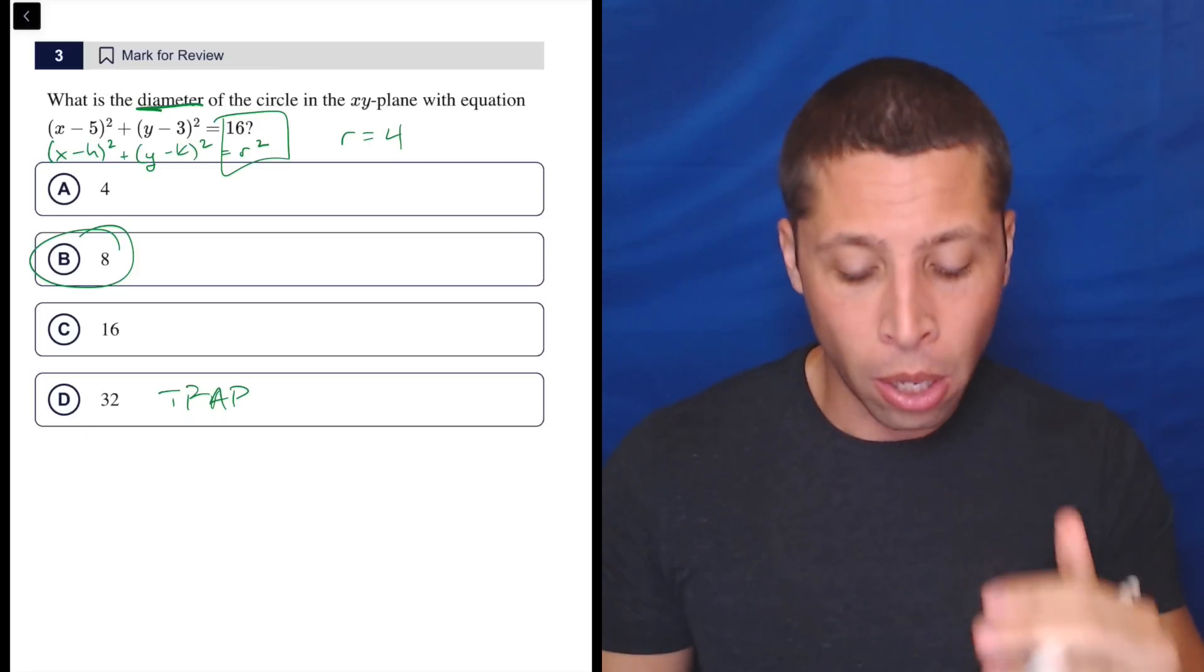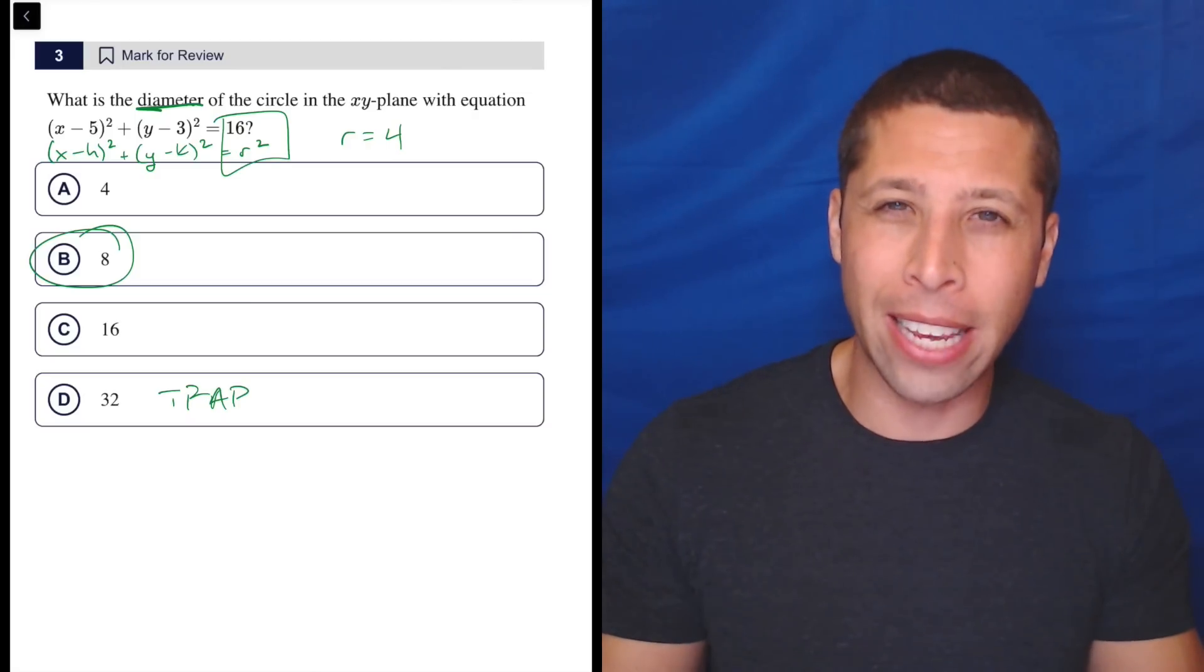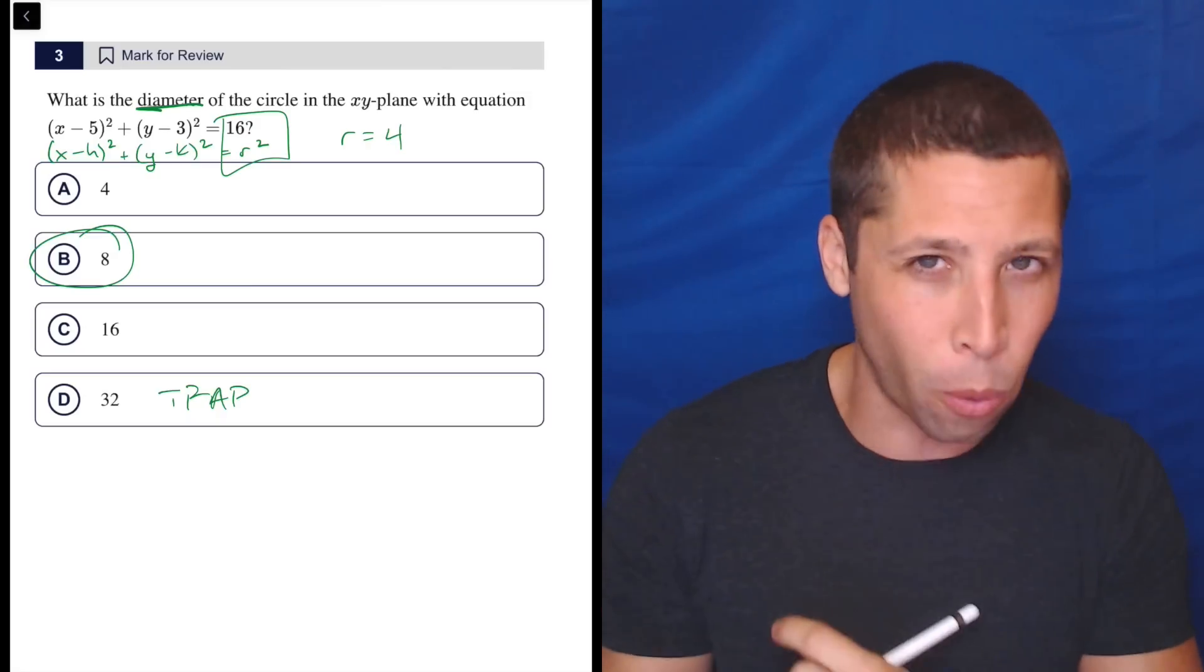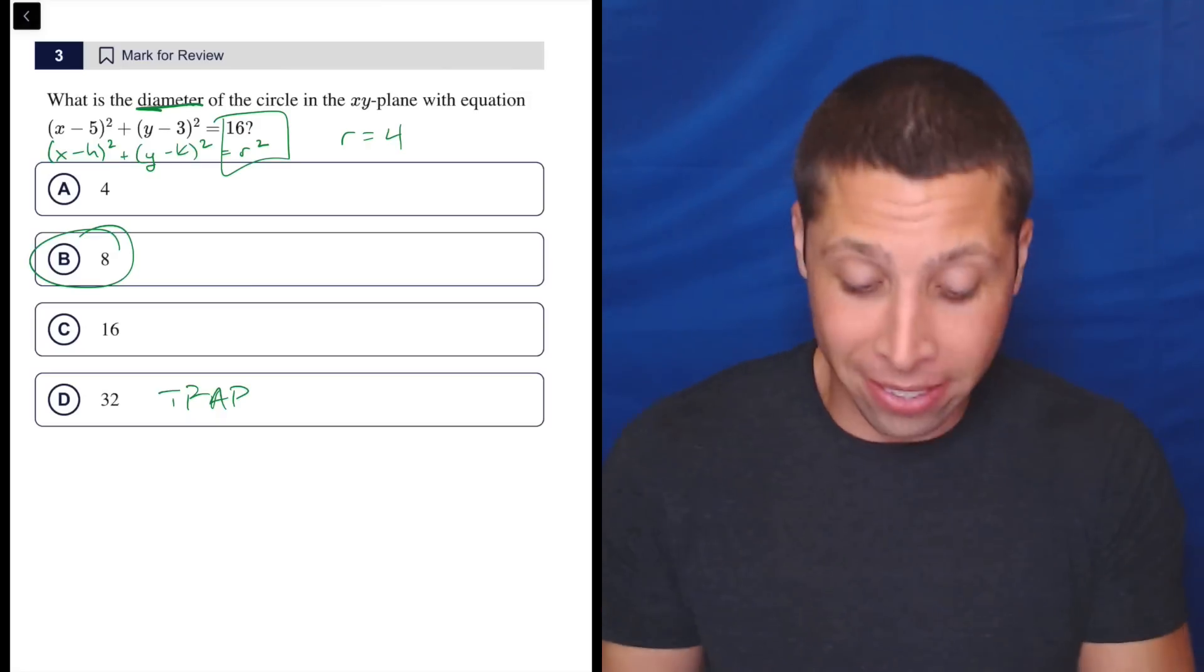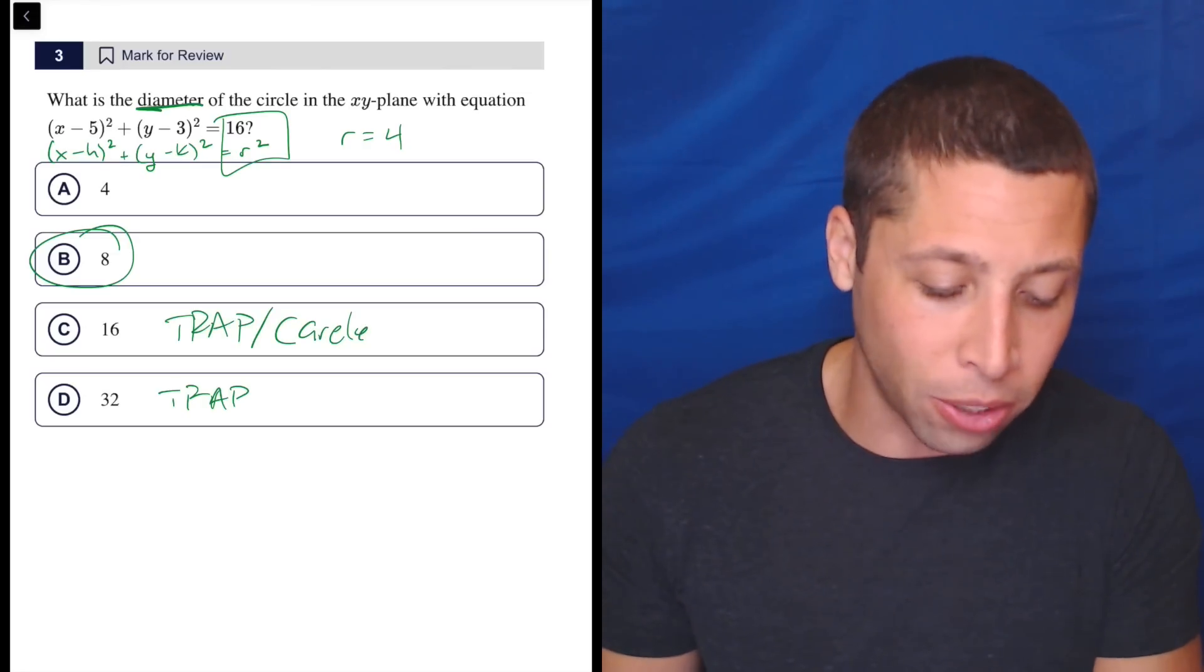But a lot of people will look at 16, know that it's the radius squared, and then in their head divide it by 2 and they get 8 as the radius instead of 4. And then they might double it and pick 16. So this is like a trap and a careless mistake all rolled into one.